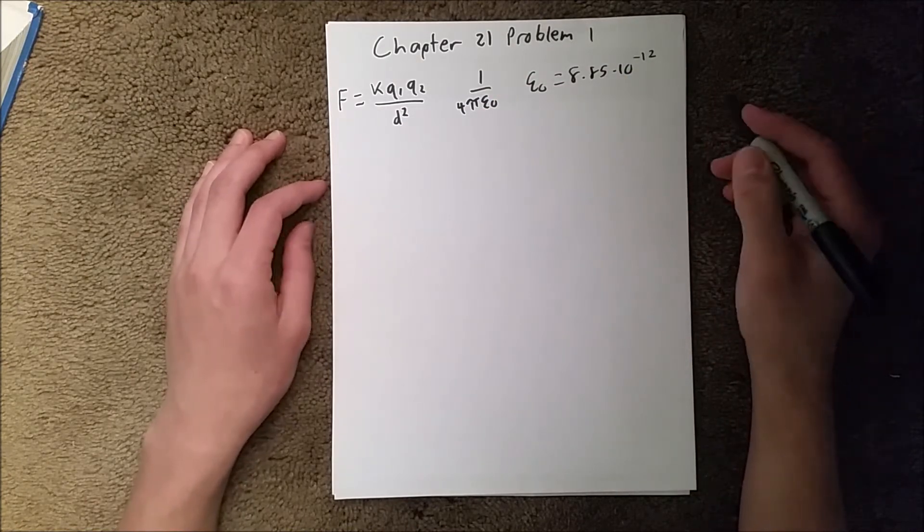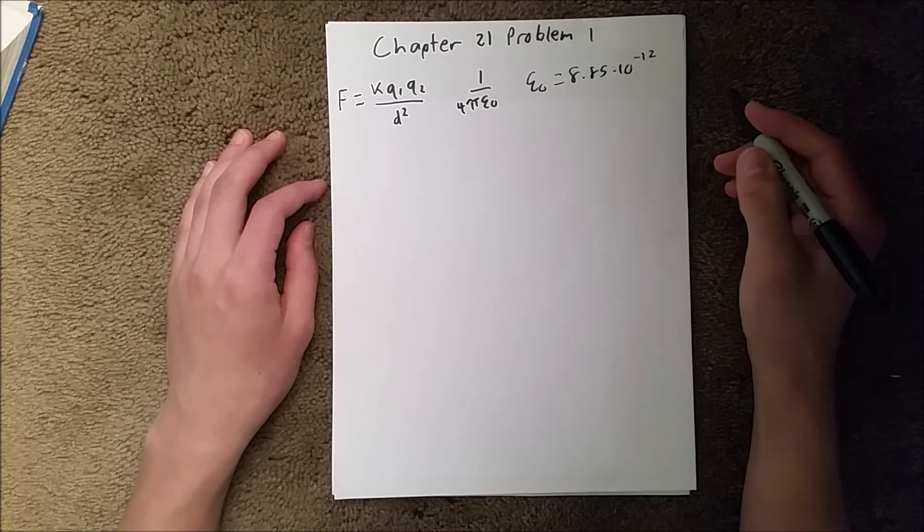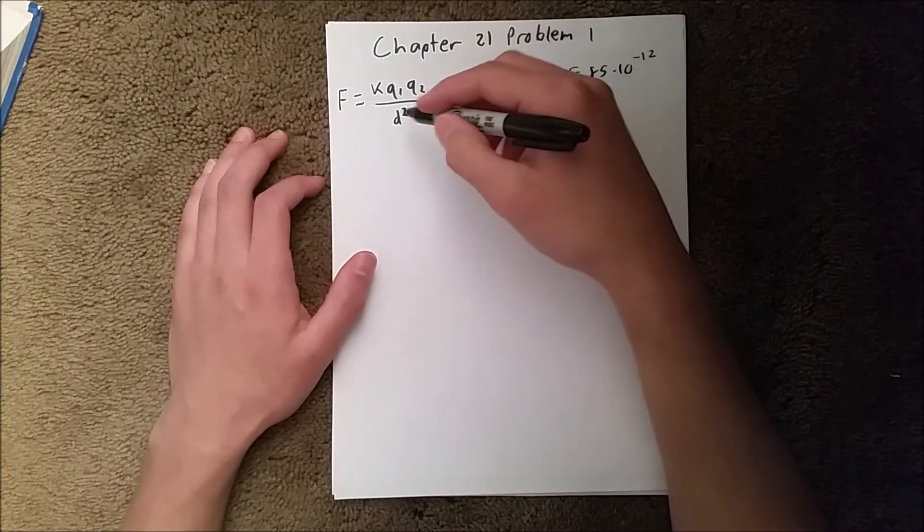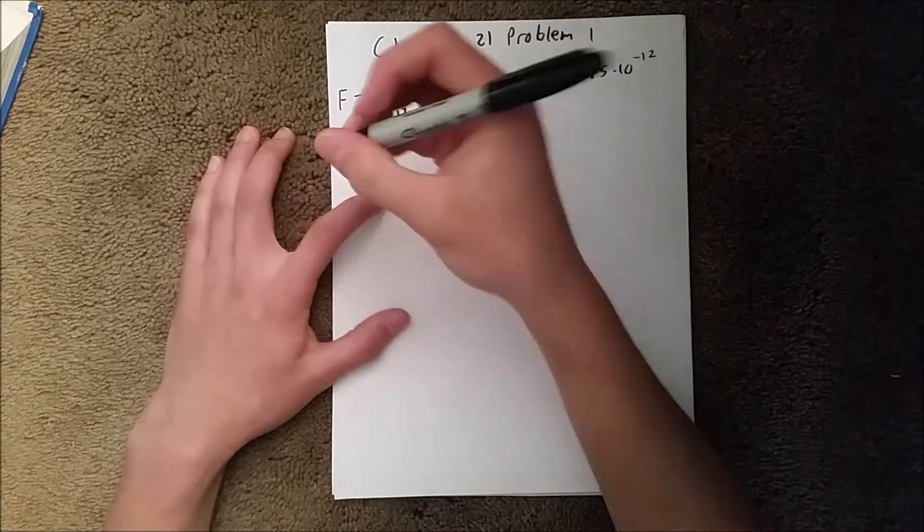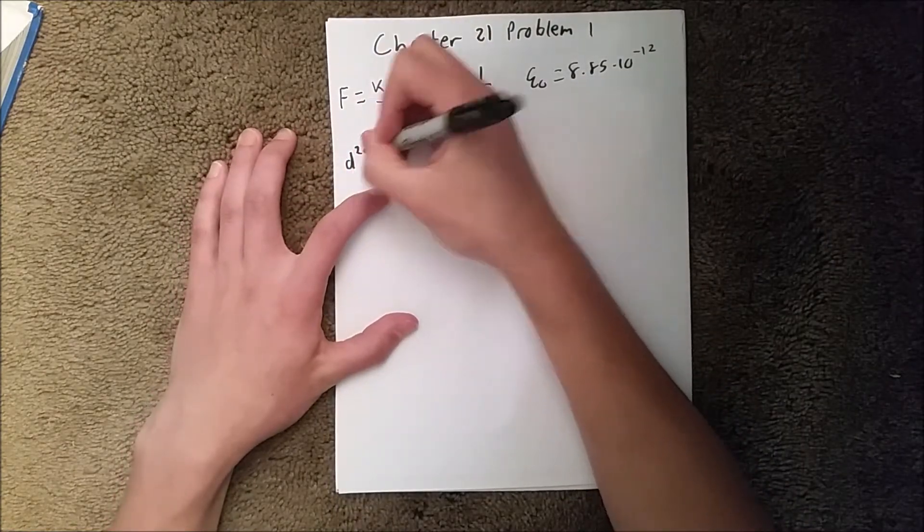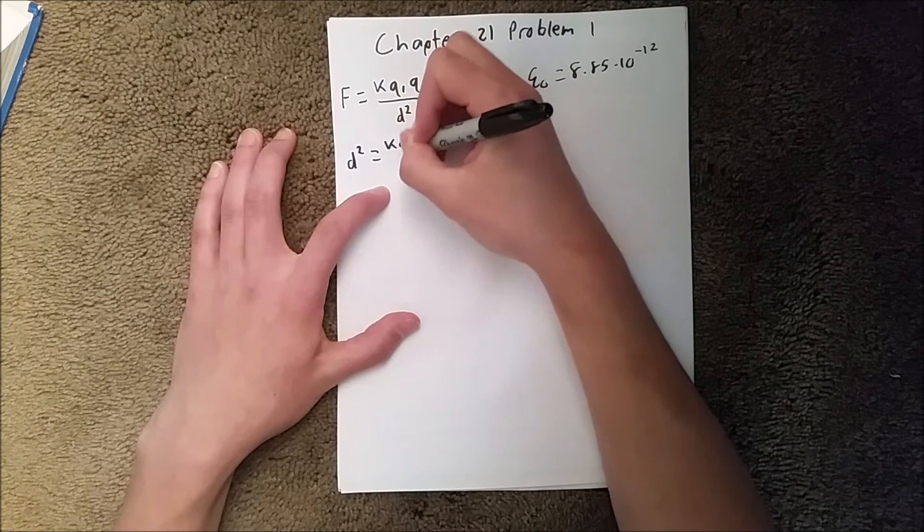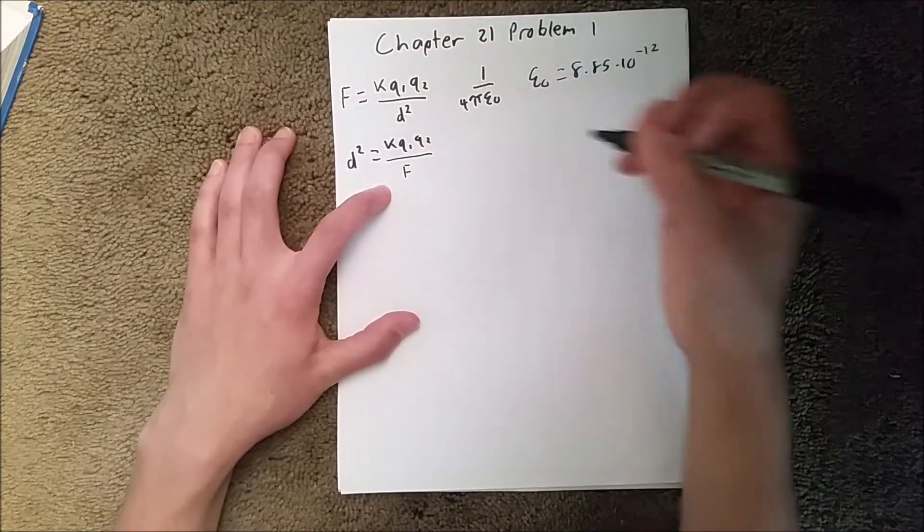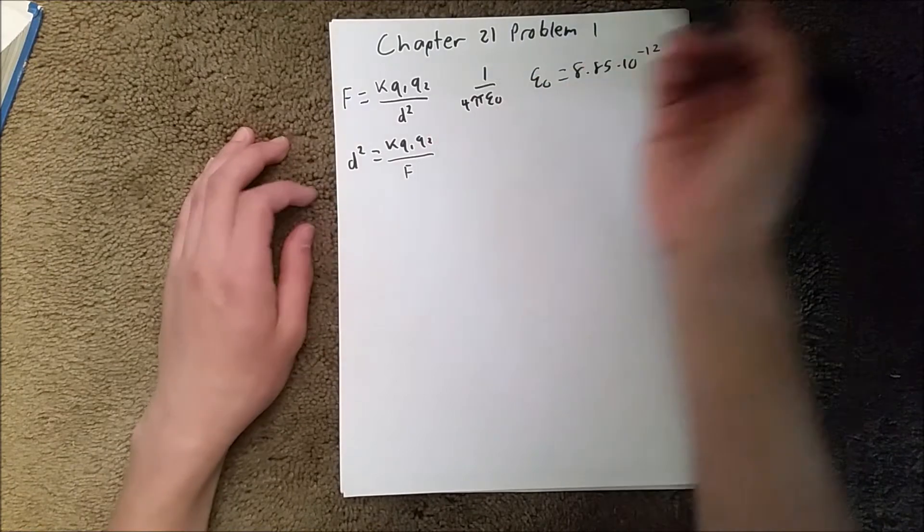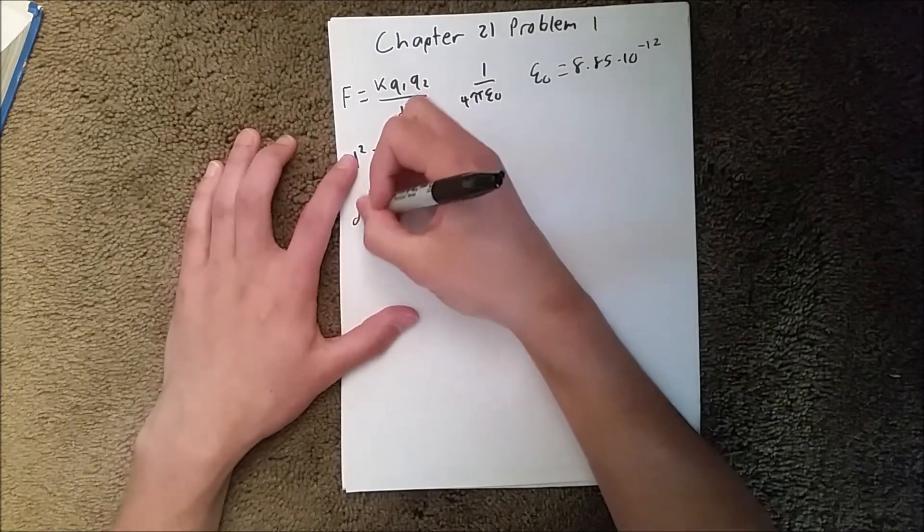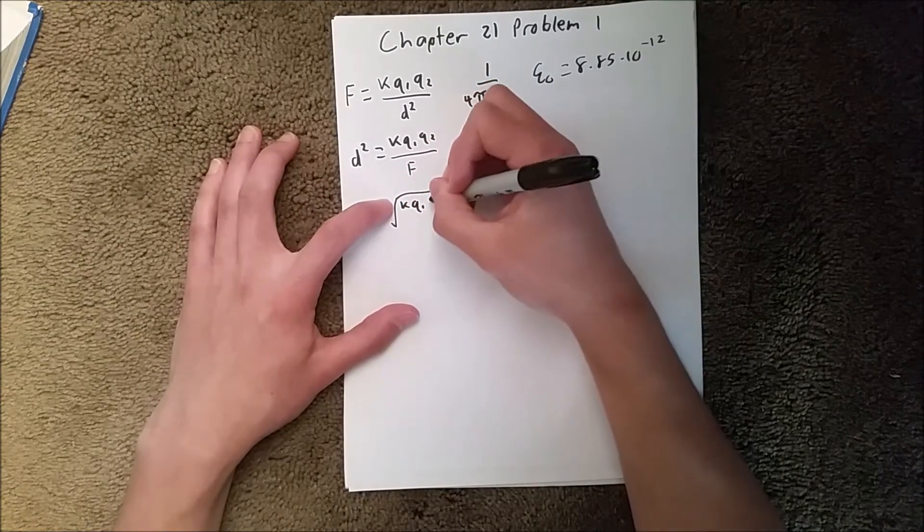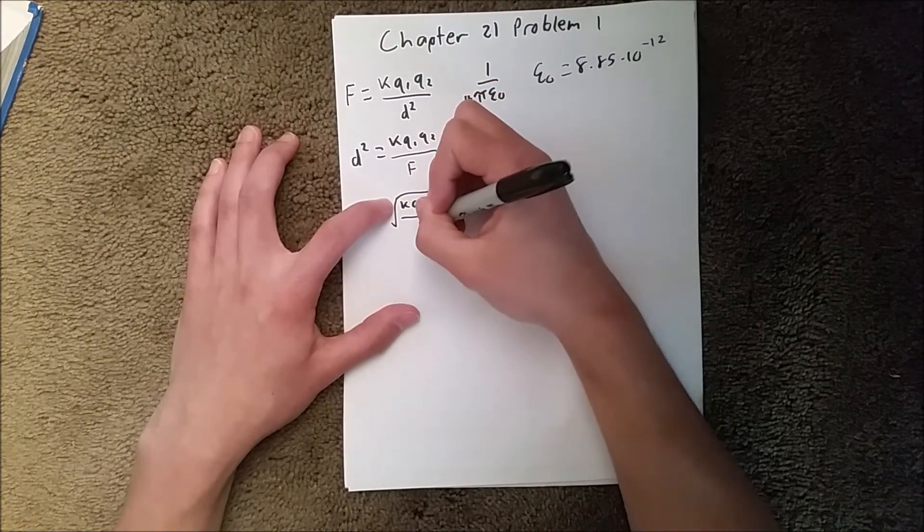We're asked to find the distance between them. What we need to do is rearrange this equation to solve for D. So we can write this again as D squared equals K Q1 Q2 over F. And then we can simplify that again by square rooting both sides and that'll give us D equals the square root of K Q1 Q2 over F.